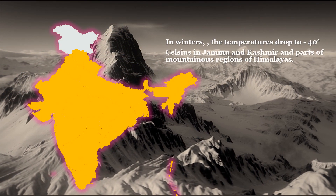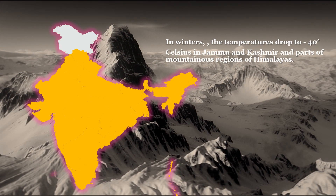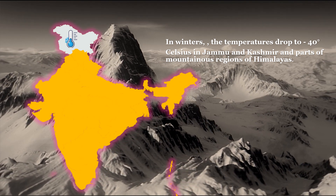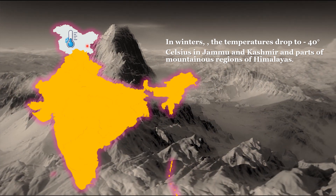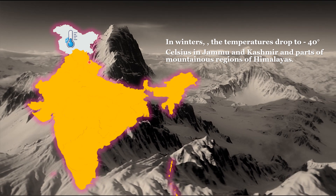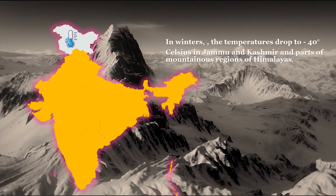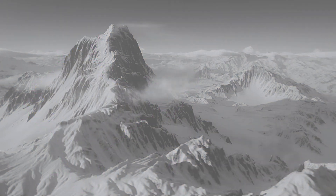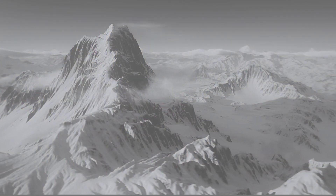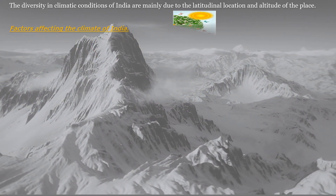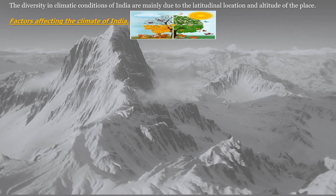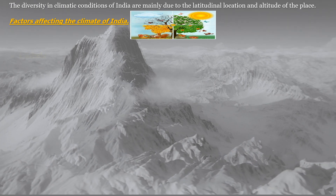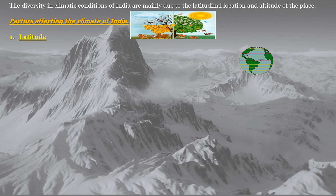In winters, temperatures drop to minus 40 degrees Celsius in Jammu and Kashmir and parts of the mountainous regions of the Himalayas. The diversity in climatic conditions of India is mainly due to the latitudinal location and the altitude of the place.